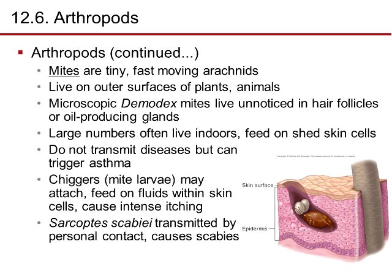Mites are tiny, fast-moving arachnids that live on the undersurfaces of plants and animals. Microscopic Demodex mites live unnoticed in hair follicles or oil-producing glands. Large numbers often live indoors and feed on shed skin cells; they don't transmit diseases but can trigger asthma. Chigger mite larvae may attach and feed on fluids within skin cells, causing intense itching. Sarcoptes scabiei, transmitted by personal contact, causes scabies — the mites burrow underneath the skin, lay eggs, and excrete feces, which cause an inflammatory reaction and itching. That concludes our look at the eukaryotic members of the microbial world for Chapter 12. Thank you very much.